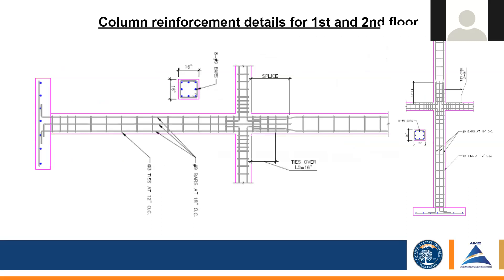For the column reinforcement details, for the first floor I used eight number nine bars. On the second and top floor we have four number nine bars — two at the top and then the beam or slab across. I also detailed the footing connection with confinement ties or straps over a length of 16 inches, with the critical sections being tighter than those in the middle.